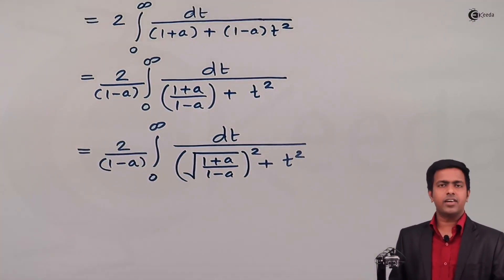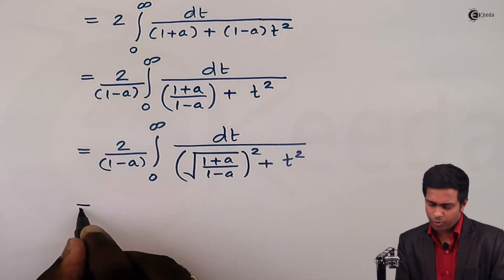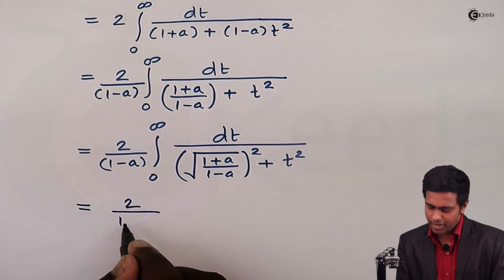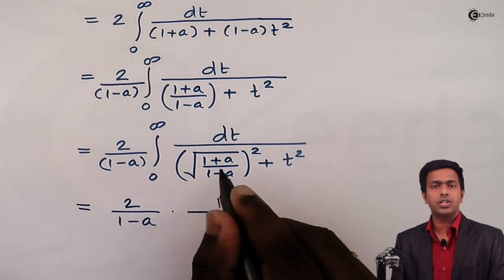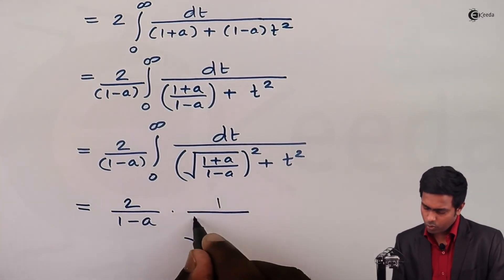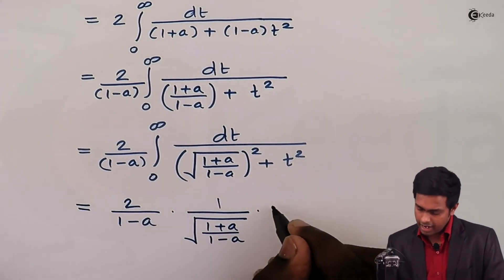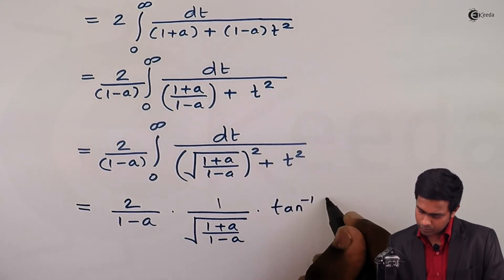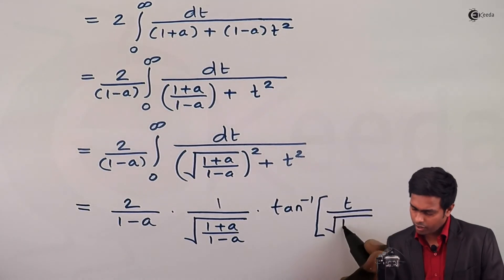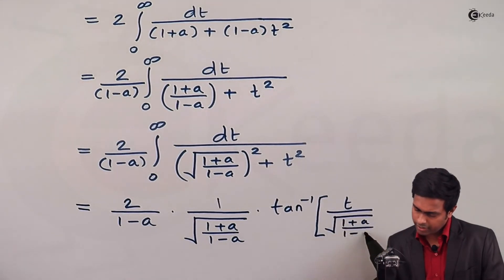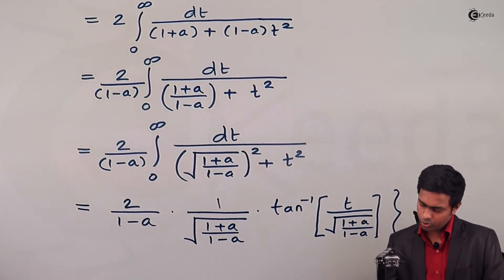We now recognize the standard tan⁻¹ formula. Representing the integral as ∫₀^∞ dt / [√((1 + a)/(1 − a))² + t²], and applying the formula, we get: 2/(1 − a) · 1/√((1 + a)/(1 − a)) · tan⁻¹(t / √((1 + a)/(1 − a))), evaluated from 0 to ∞.